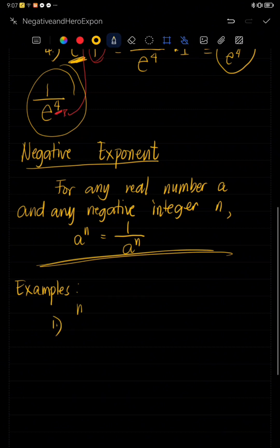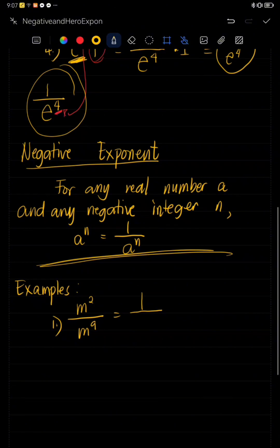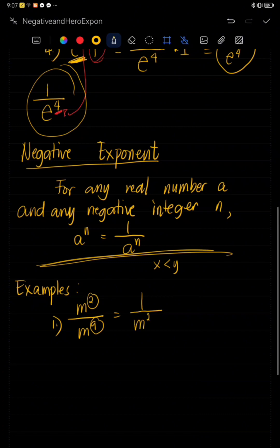If we have M raised to two over M raised to nine, we use the sixth law of exponents, which gives one over M raised to (Y minus X) when X is less than Y. Two here is our X and nine is our Y. So that becomes one over M raised to nine minus two, which is one over M raised to seven.